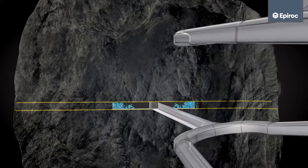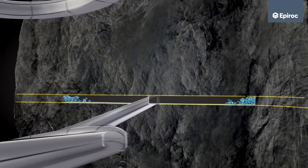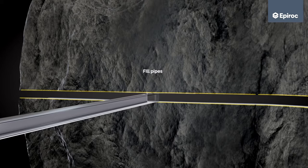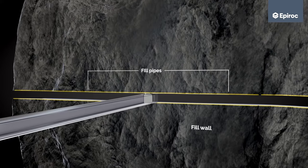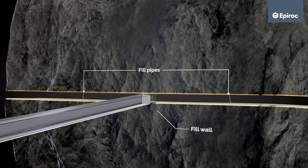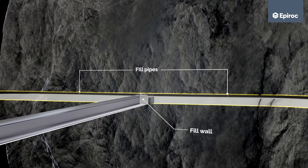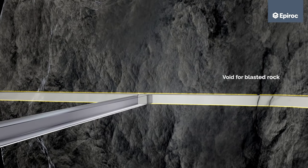Each production level is accomplished by drifting until the entire slice has been mined. The slice is then backfilled and the fill becomes the working platform from which the next level is mined.